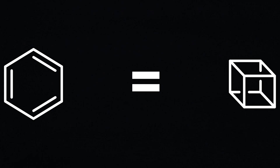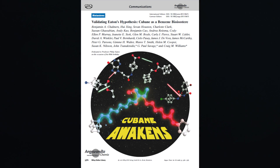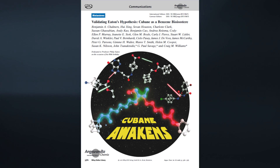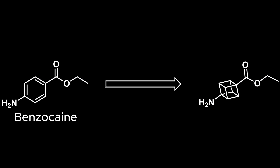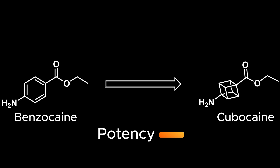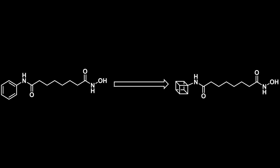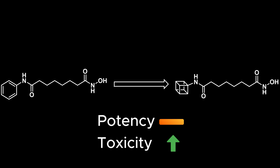To test Eaton's claims that cubane could act as a bioisostere of benzene rings, a group of researchers took a variety of currently used benzene ring-containing pharmaceuticals and replaced them with cubanes. One of the molecules included the local anaesthetic benzocaine, which became cubocaine when its phenyl ring was replaced. Cubocaine was at least as effective as benzocaine in treating pain in the animal models used. Another molecule investigated was SAHA, which was approved by the FDA in 2006 for the treatment of cutaneous T-cell lymphoma. When the terminal phenyl group was replaced by cubane, the compound showed essentially the same ability to inhibit cancer cell growth, but exhibited lower toxicity to normal cells compared to the phenyl compound.